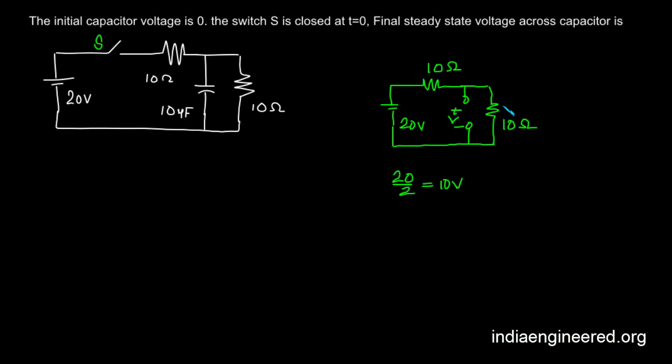Or we can use voltage divider rule. The voltage divided by the total resistance, that will give the current, into the resistance that is 10 ohm. This will be the voltage that will be nothing but 10 volts.